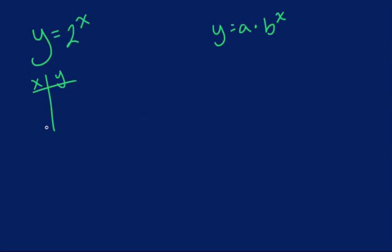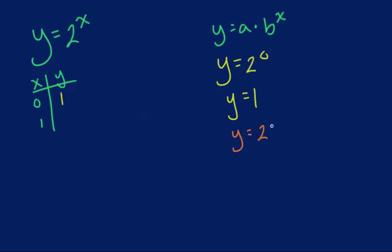That's one of the best things to do with this. So I'll pick two points — 0 and 1. When we do y equals 2 to the power of 0, y equals 1. So when x equals 0, y equals 1. And then plugging in 1 for x: 2 to the power of 1 gives y equals 2. So our two points are (0, 1) and (1, 2).